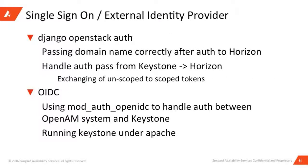For the single sign-on external identity provider, those two changes we made are really where the token exchange happens. Inside Keystone, we didn't have to make any changes, but we did have to run it under Apache and use the mod_auth_openidc module to handle communication between Apache and our SSO provider, which is OpenAM. You could use SAML as well instead of OIDC, but we chose to use OIDC.